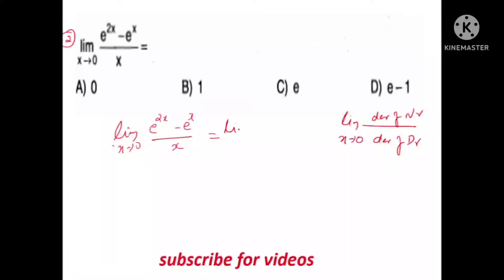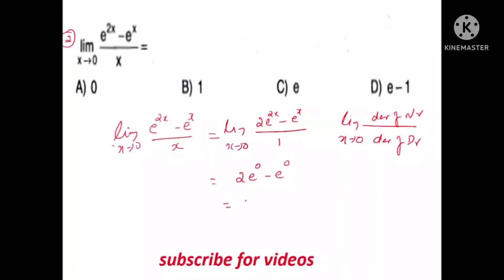Derivative of the numerator: limit x tends to 0, 2 into e raised to 2x minus e raised to x. The derivative of e raised to x is e raised to x. Divided by 1. Then apply x equals 0: 2·e^0 minus e^0, that is equal to 2 minus 1. The answer is 1, which is option B.